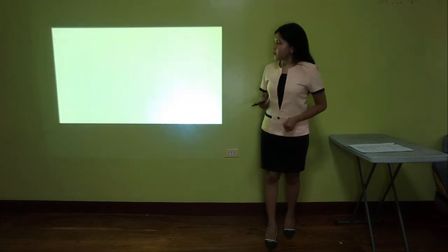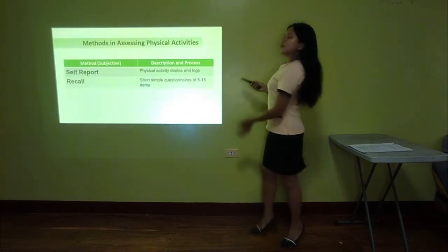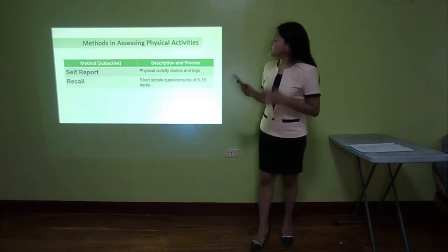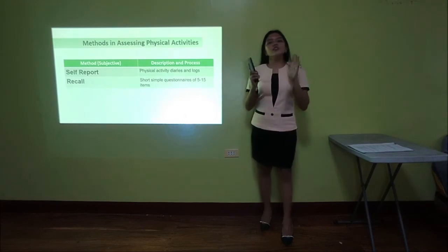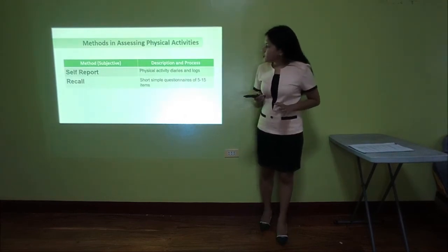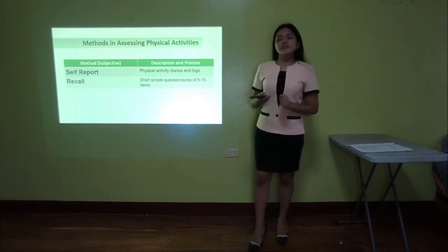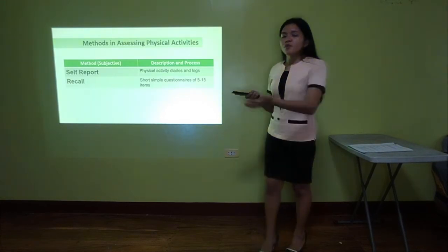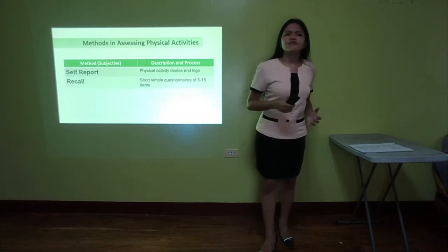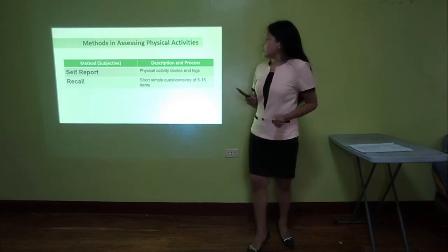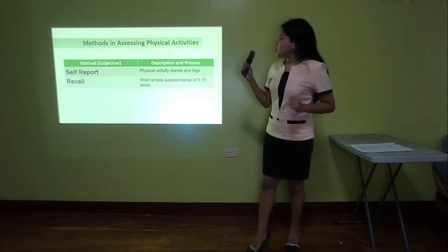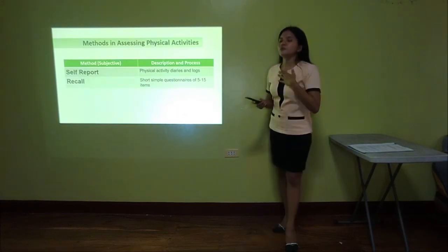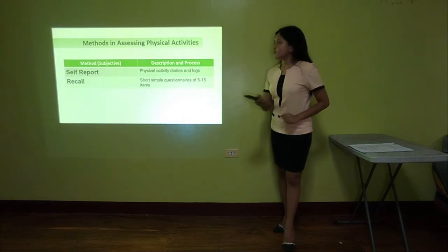We also have subjective methods. The first one is self-report, which is done through physical activity diaries and logs. This is subjective because you are the one who will assess yourself whether the activity was light or hard. We also have RICO, which uses short, simple questionnaires of 5 to 15 items that you will answer yourself.